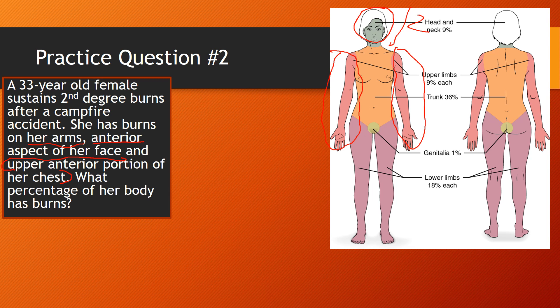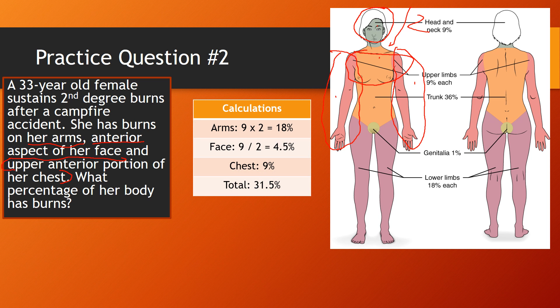And then what else? Anterior aspect of her face, upper anterior portion of her chest. So basically this part right here. So we have one, two, three and a half. So let's look at the calculations. You have two arms that gives you 18, you have half of the face or head I should say, not face, head, and that's going to be 4.5. And then obviously you have your chest which is up there, that's going to be 9. Add that all up and it's 31.5% of her body has been burned.